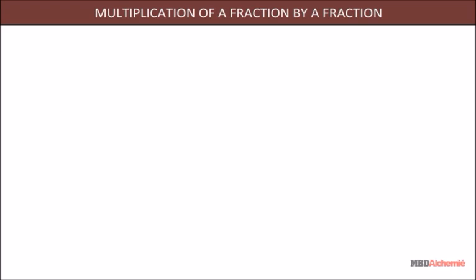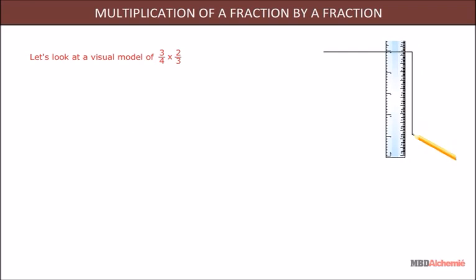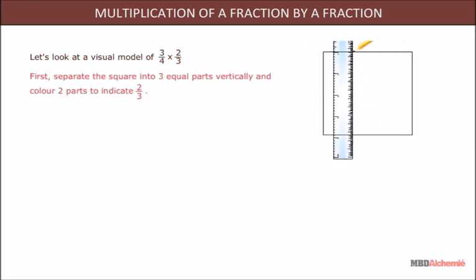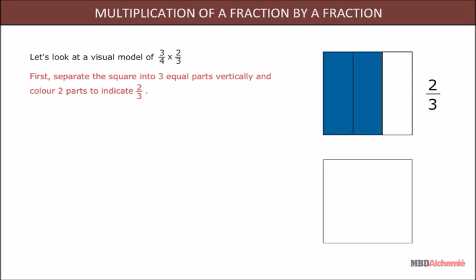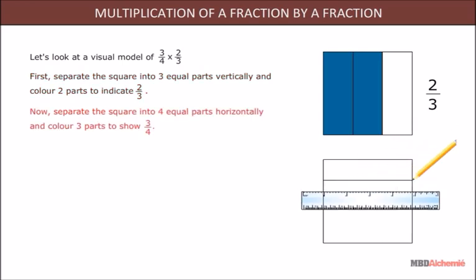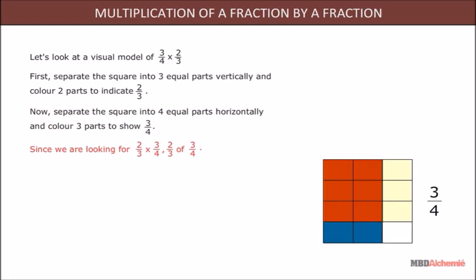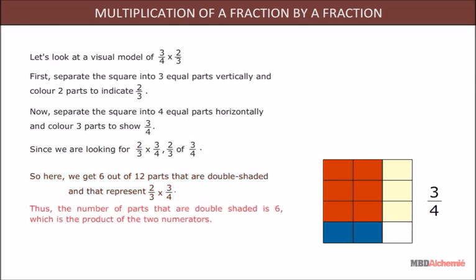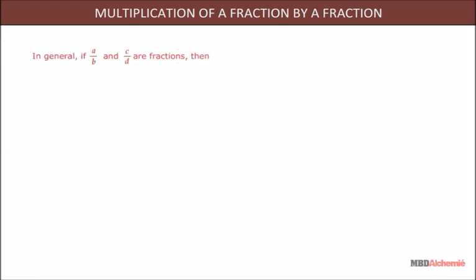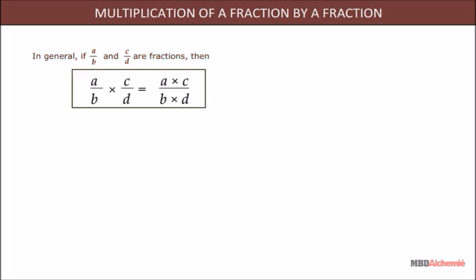Multiplication of a fraction by a fraction: consider a visual model of 3/4 × 2/3. First, separate a square into 3 equal parts vertically and color 2 parts to indicate 2/3. Then separate the square into 4 equal parts horizontally and color 3 parts to show 3/4. We get 6 out of 12 parts that are double-shaded, representing the product. In general, if a/b and c/d are fractions, then a/b × c/d = (a × c)/(b × d). The product of two fractions equals the product of the numerators over the product of the denominators.